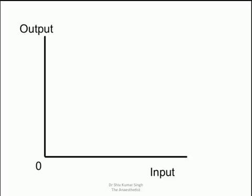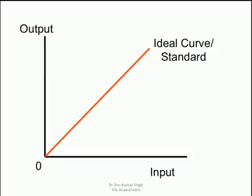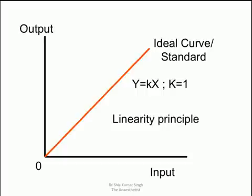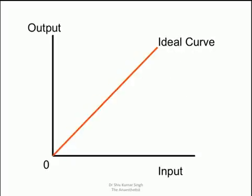So if you were to look at a graph for calibration, on x-axis we have input, on y-axis we have output and we have a standard line on the ideal curve. And this follows the principle of linearity. So anything you measure, the input goes on x-axis, output on y-axis and ideally your readings will fall on this ideal curve or the standard graph.